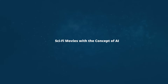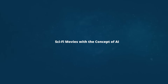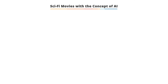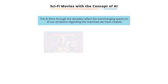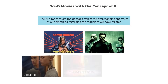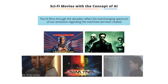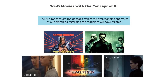Let's look at some sci-fi movies featuring the concept of artificial intelligence. The films featuring AI reflect the ever-changing spectrum of our emotions regarding the machines we have created. Humans are fascinated by the concept of artificial intelligence, and this is reflected in the wide range of movies on AI.